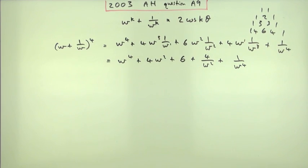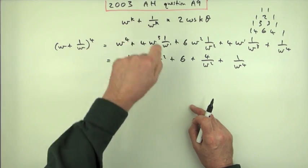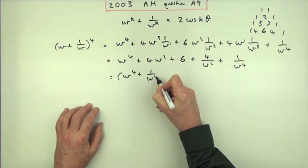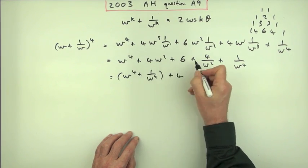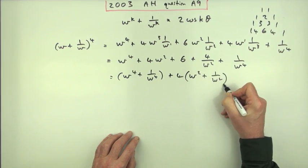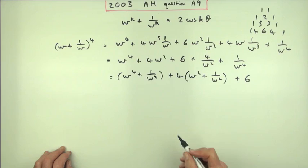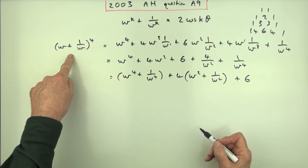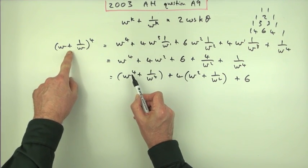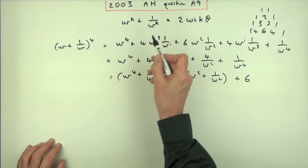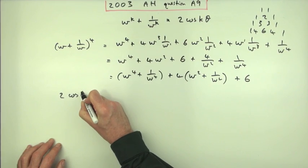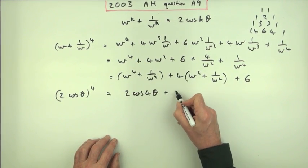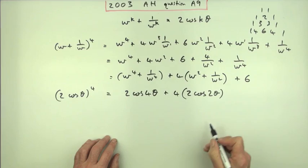Now, it's the pairing that matters. W^k + 1/W^k goes together to make a cosine. So pair up: (W^4 + 1/W^4), then 4·(W² + 1/W²), then the 6. These are all cosines: W^4 + 1/W^4 = 2 cos(4θ), W² + 1/W² = 2 cos(2θ), and the unpaired 6 corresponds to W^1 + 1/W^1 = 2 cos θ at power 1. So the left-hand side is (2 cos θ)^4 = 2 cos 4θ + 4·2 cos 2θ + 6.